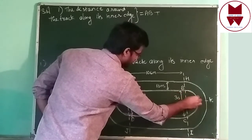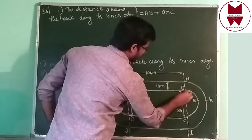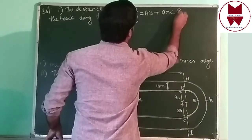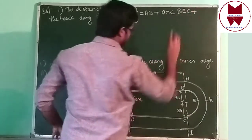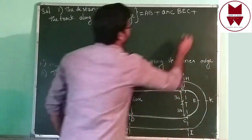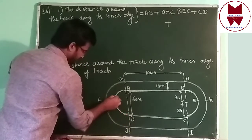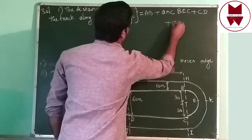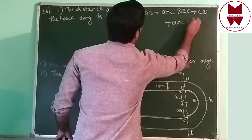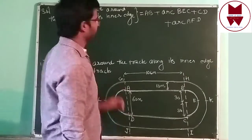Then this — what is this? This is one arc, isn't it? Arc BEC. Plus this downside part, CD. Plus this side, that is also one arc — arc AFD. If you add these four things, that time you will get the length of the inner edge: AB, plus arc BEC, plus CD, plus arc AFD.